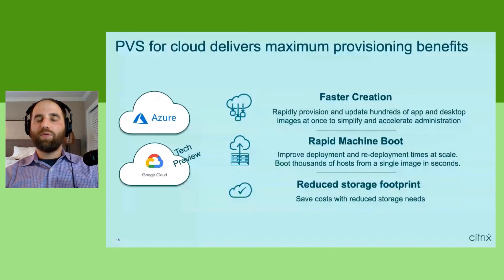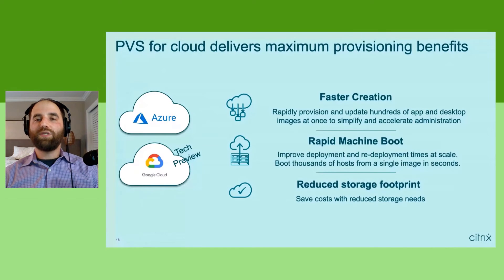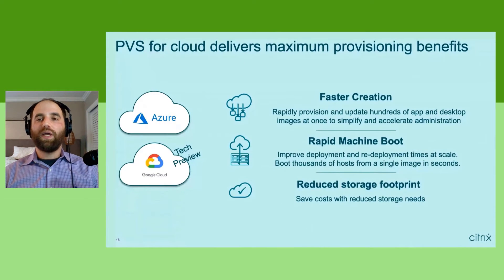On provisioning services: we've worked closely with Azure and Google Cloud to make what was traditionally an on-premises network-based streaming solution available in the cloud. This is an incredible engineering effort. If you're a Citrix enterprise customer, you know provisioning services — it's been Citrix's secret sauce for over 15 years, enabling rapid provisioning, deprovisioning, and lifecycle management of thousands or tens of thousands of VMs. This technology is now available across Azure and Google Cloud, with full documentation and getting-started guides available.